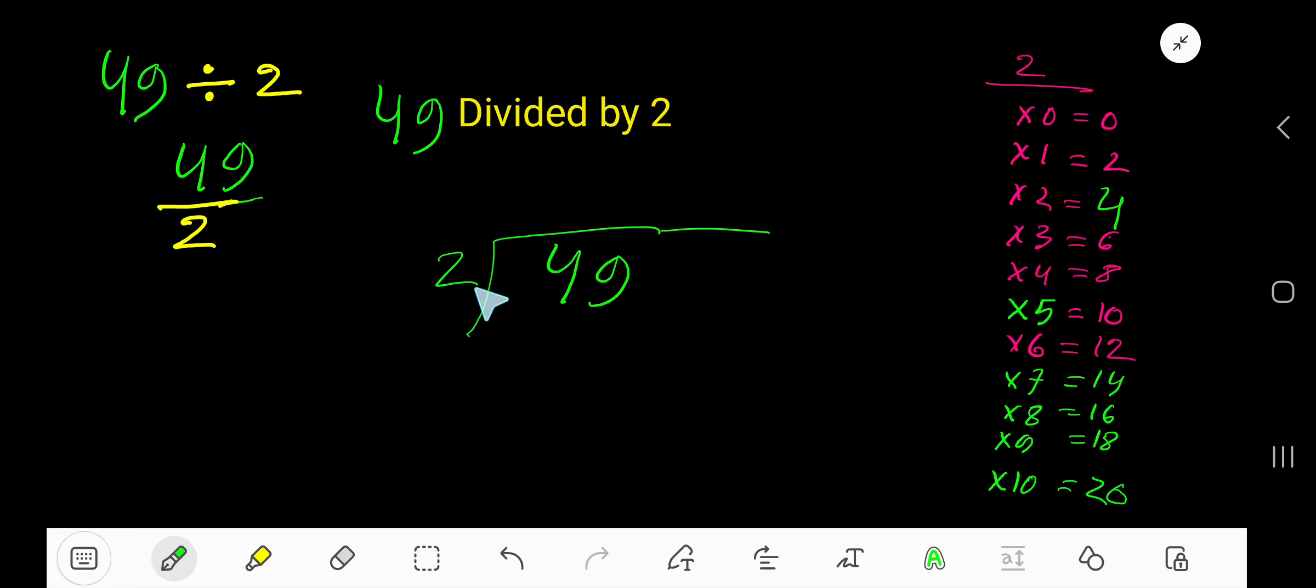49 divided by 2. 2 goes into 4 how many times? 2 goes into 4 two times. Write 2. 2 times 2 is 4. Subtract, 0. Bring down this 9.